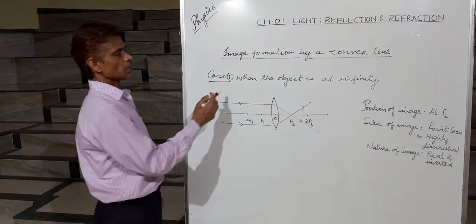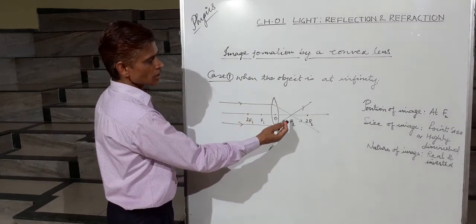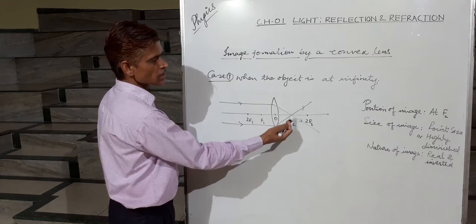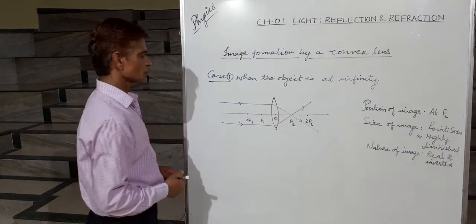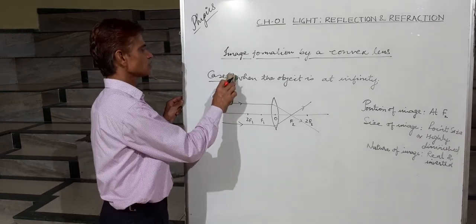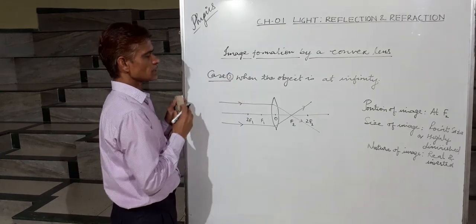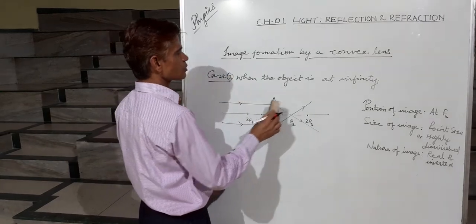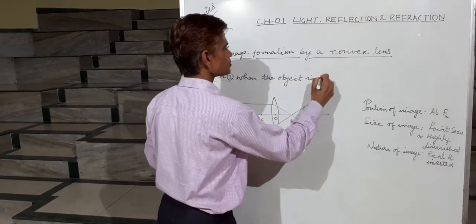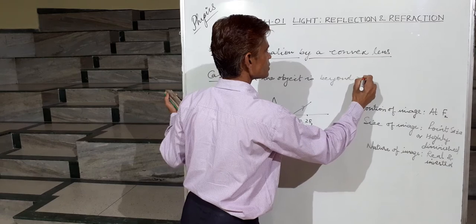So we have seen that when the object is at infinity, the image is formed at F2, its size is point size, and a real and inverted image is formed. Now case number 2: when the object is beyond 2F1.